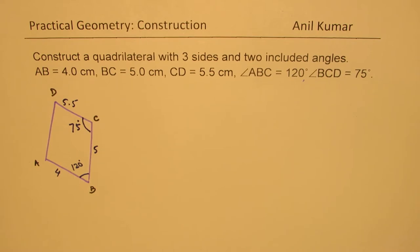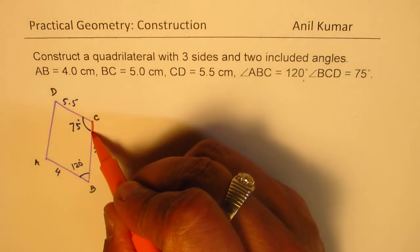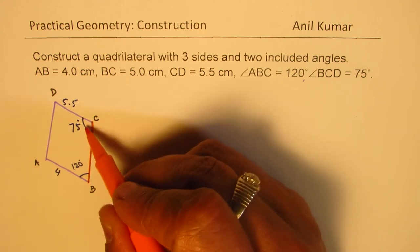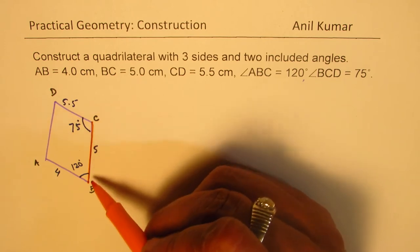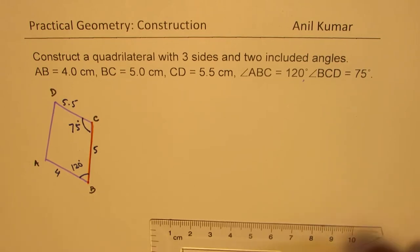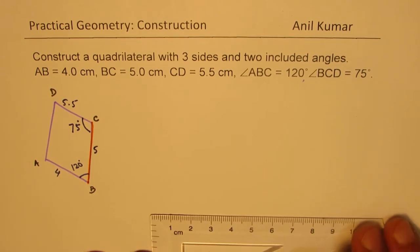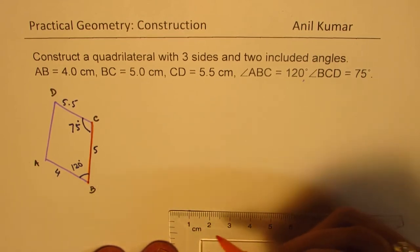Now from the given information, it makes sense that you begin with CB, since most of the things provided are based on CB. So we'll begin with CB, sketch a line which is BC, 5 units long.